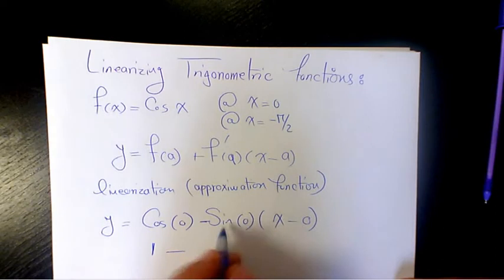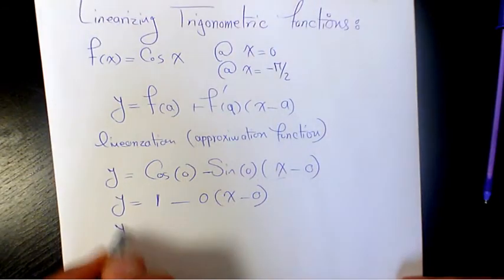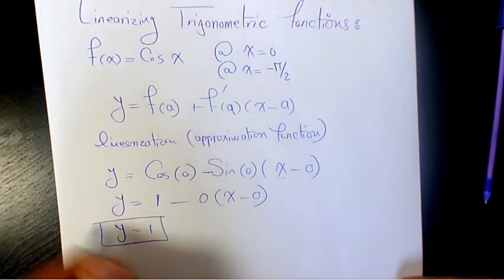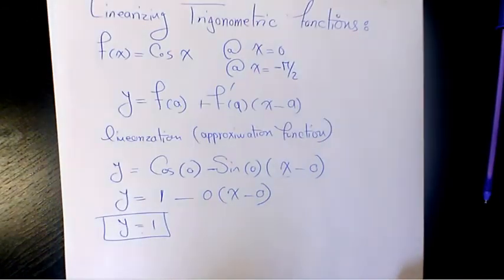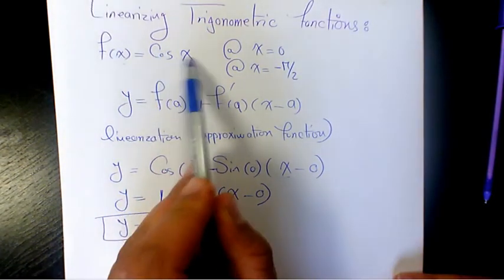So this part is going to be 0 and we have y equals to 1. So that's going to be the linear approximation to f of x equals to cosine x at point x equals to 0.